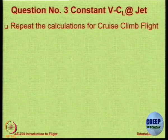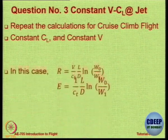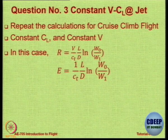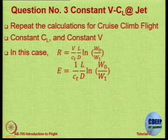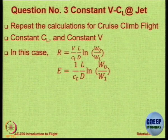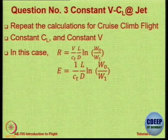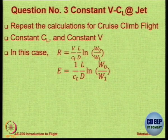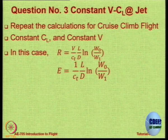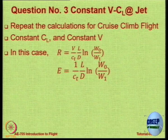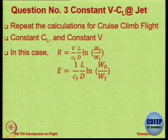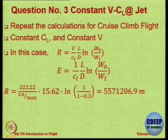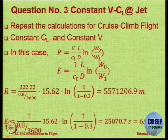For the cruise climb: constant C_L, constant V. The formulae are simpler — range R = V/C × (L/D) × ln(W0/W1), and endurance E = R/V = (1/C) × (L/D) × ln(W0/W1). Endurance is the same as before since all parameters are unchanged. The range calculates to 5,571 kilometers.